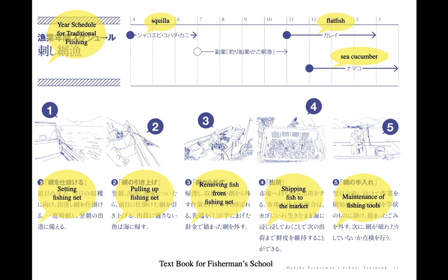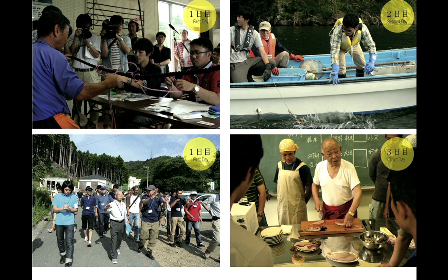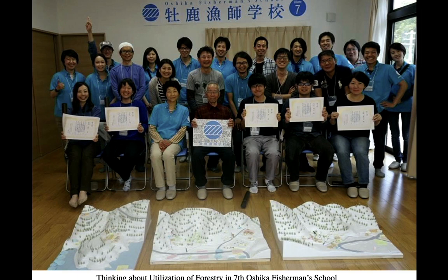The first session was held a year and a half after the disaster. A textbook was developed from field surveys on fishermen and fisheries, and 15 fishermen served as teachers, giving lectures on fishing methods, processing, and local history. By the time of the COVID event, the program had been held 12 times, and two participants had moved to the area, apprenticed themselves to fishermen, and became independent fishermen. In that process, the creation of a place for community exchange was raised as a new issue.